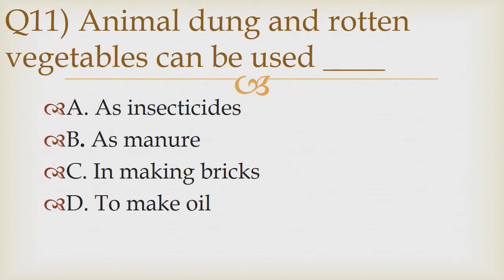Question number 11. Animal dung and rotten vegetables can be used as ___. Option A: As insecticides. Option B: As manure. Option C: In making bricks. Option D: To make oil. The correct answer is Option B — as manure.